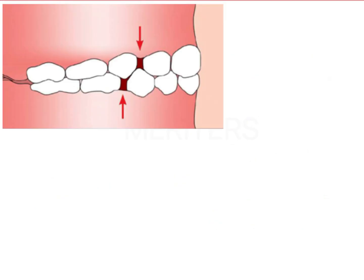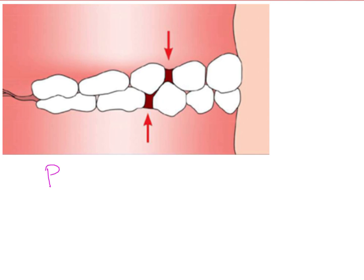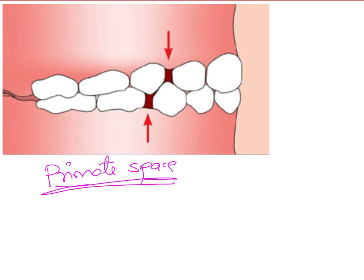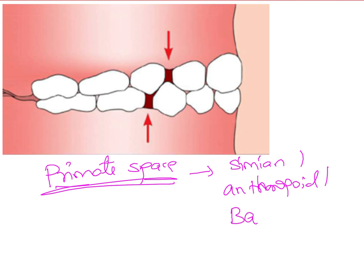The second type of space seen in the deciduous dentition is known as the primate space. This primate space is known by many names — it is also known as simian spaces, anthropoid spaces, or Bohm spaces, because it was described by Bohm. It is called simian spaces because it appears similar to the spaces seen in the dentition of primates. That's why it is also known as primate spaces, anthropoid spaces, or simian spaces.